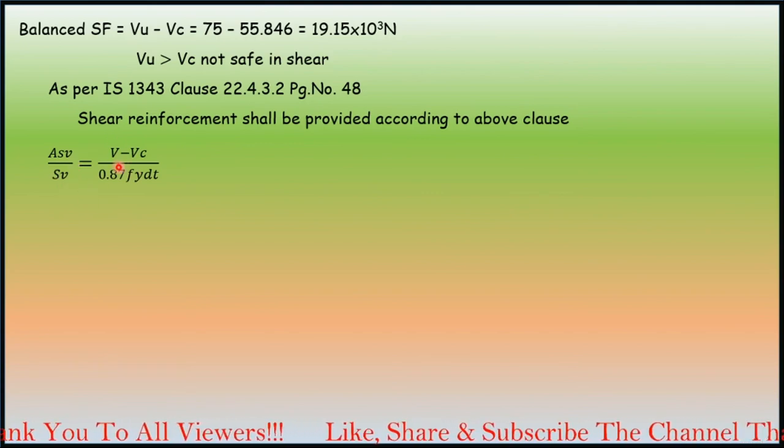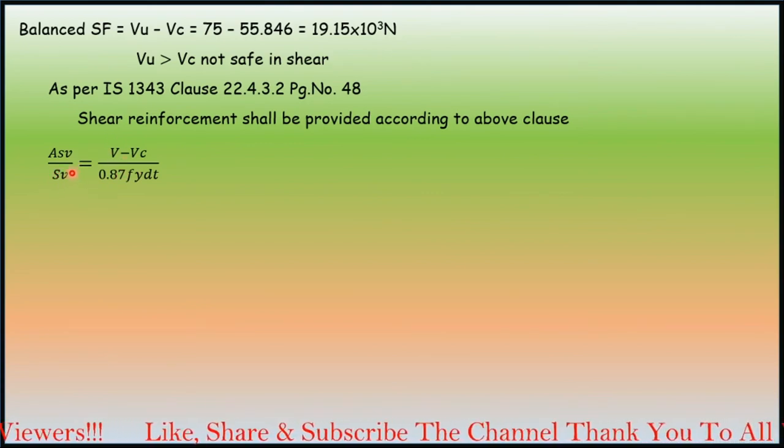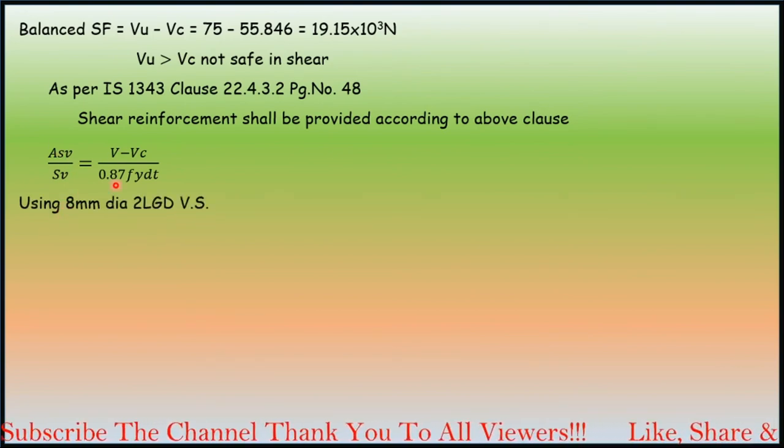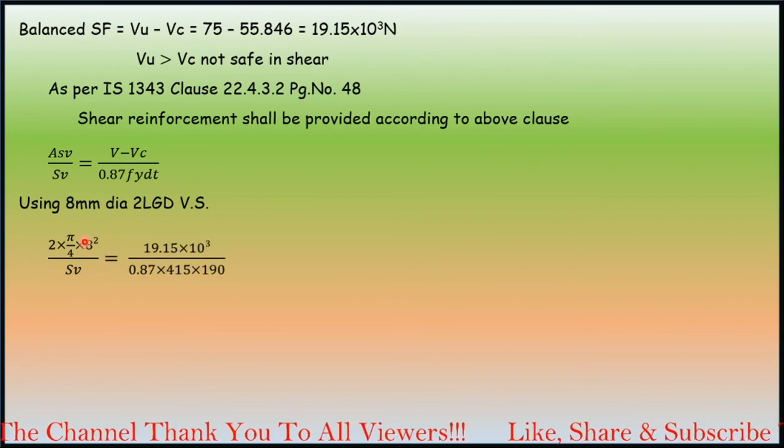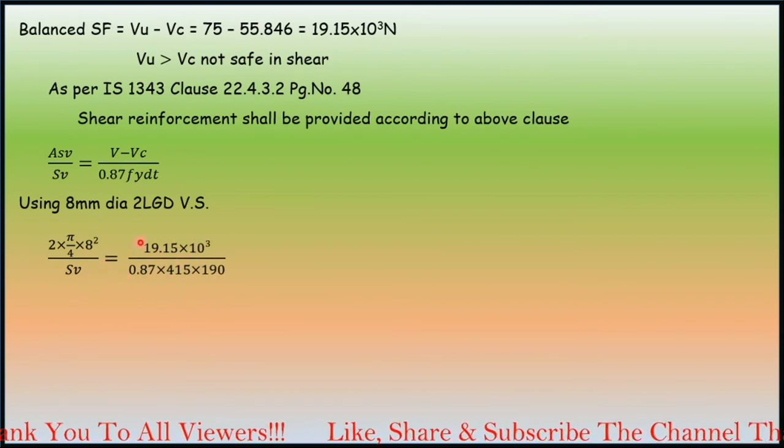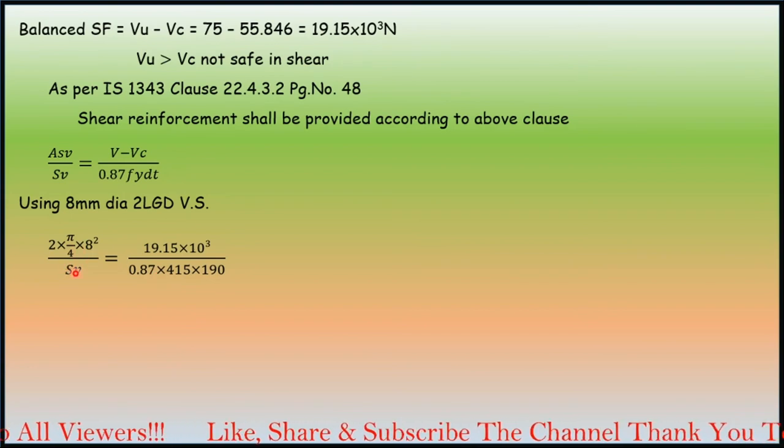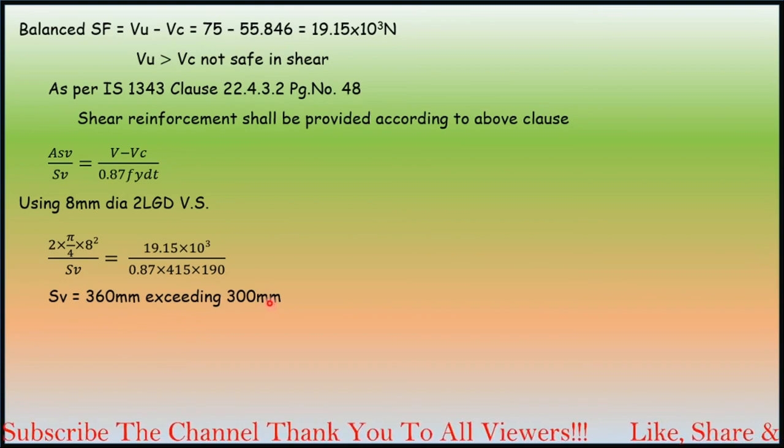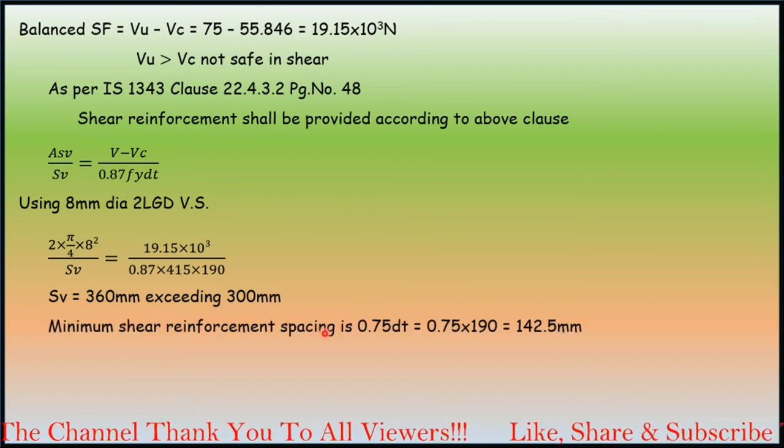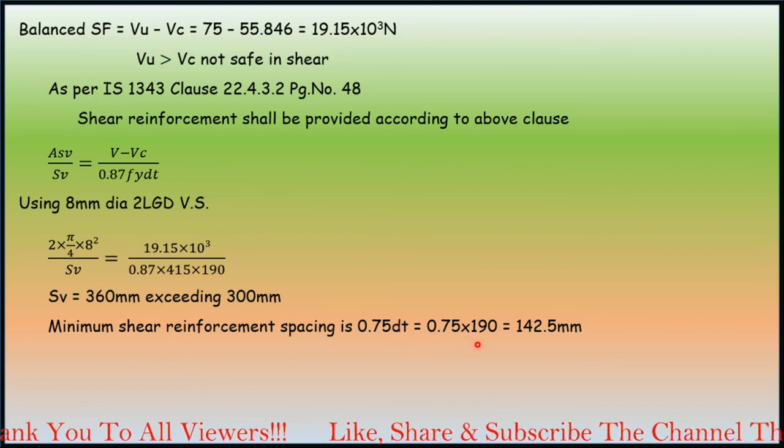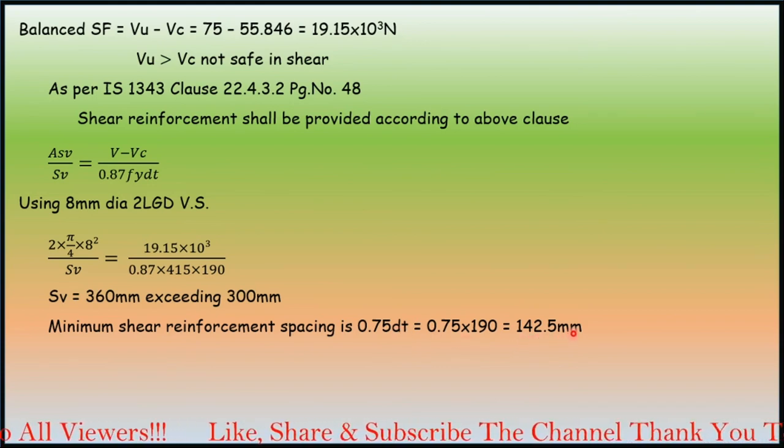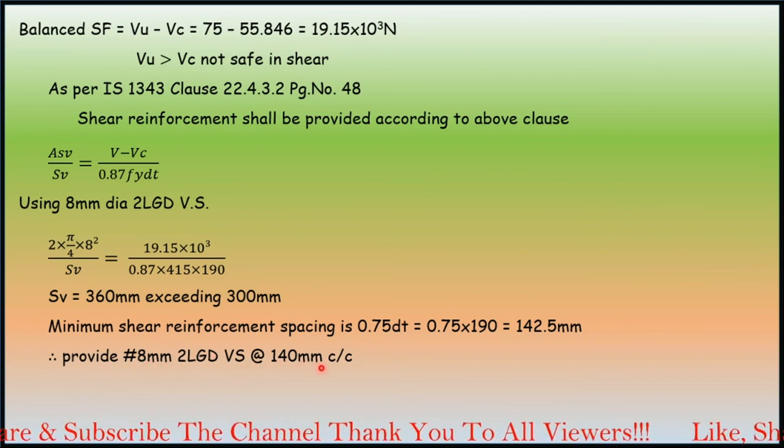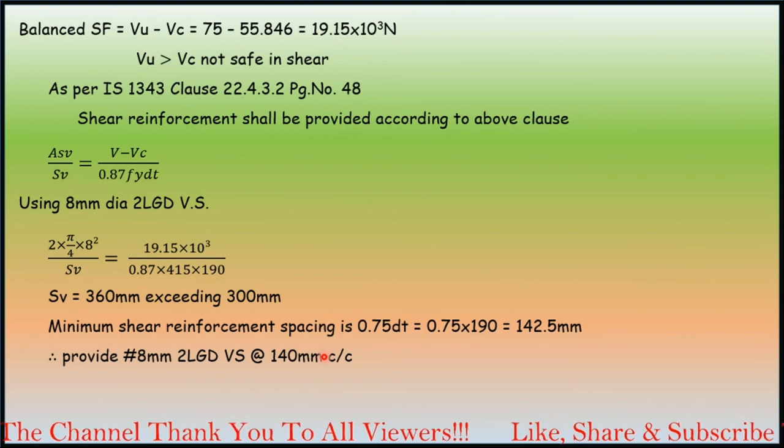With respect to the formula, we have to calculate the spacing of the shear reinforcement using 8 mm diameter two-legged vertical stirrups. We will go into the particular formula, calculating that part using all other data as per known in the question. We are remaining with only spacing. Spacing comes out to be 360 mm, which is exceeding 300 mm. So minimum shear reinforcement, we have to see. First, the minimum shear reinforcement comes out to be 142.5 mm. Therefore, provide 8 mm two-legged vertical stirrups at 140 mm center to center.